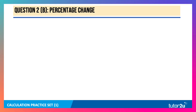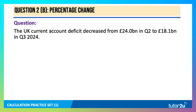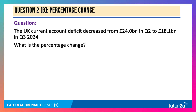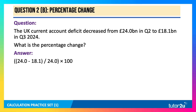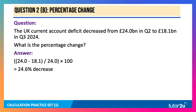Here's another percentage change question. The UK current account deficit decreased from £24.0 billion in the second quarter of 2024 to £18.1 billion in the third quarter of 2024. What is the percentage change? Again, it's the change divided by the original, multiplied by 100. So 24.0 minus 18.1, divided by 24.0, multiplied by 100, gives a 24.6% decrease.